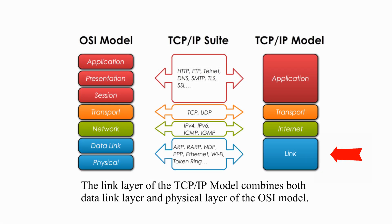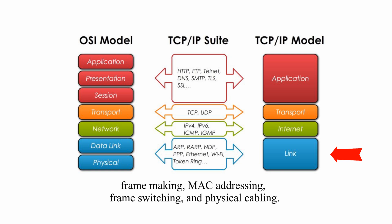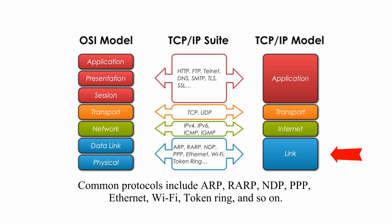The link layer of the TCP/IP model combines both the data link layer and physical layer of the OSI model. Some textbooks call this layer network interface. The main functions at this layer include frame making, MAC addressing, frame switching, and physical cabling. Common protocols include ARP, RARP, NDP, PPP, Ethernet, Wi-Fi, Token Ring, and so on.